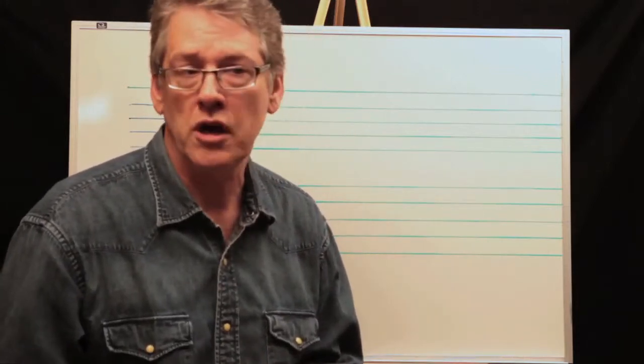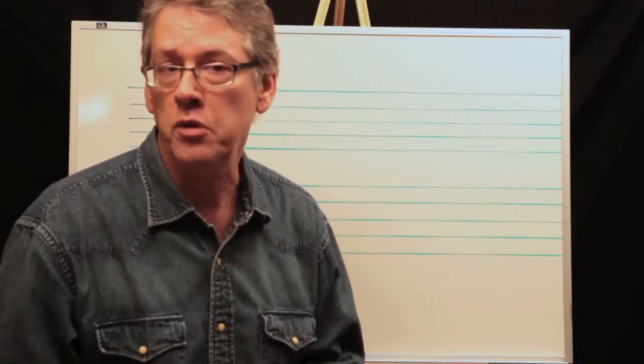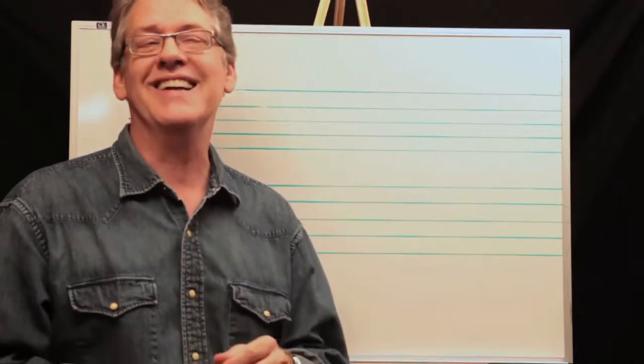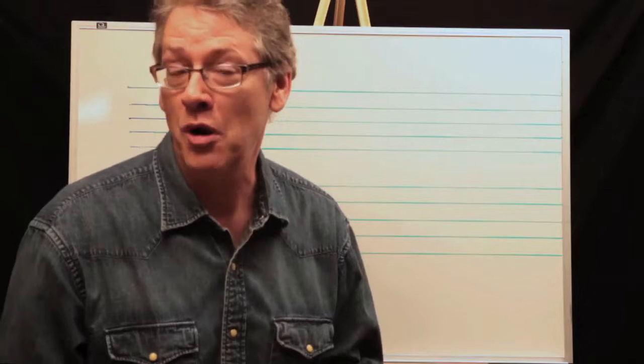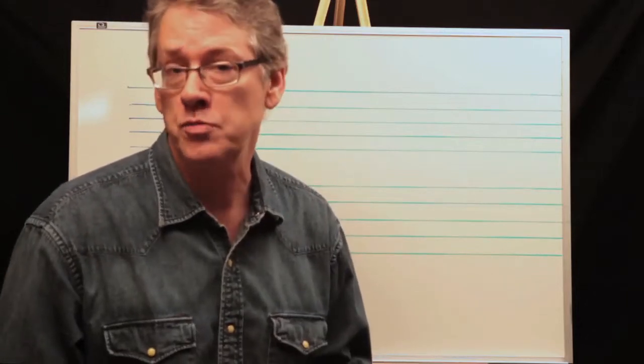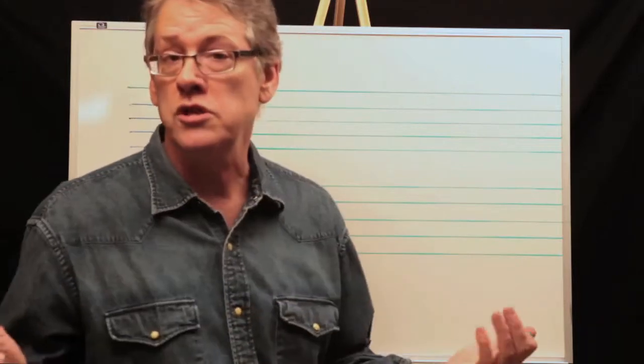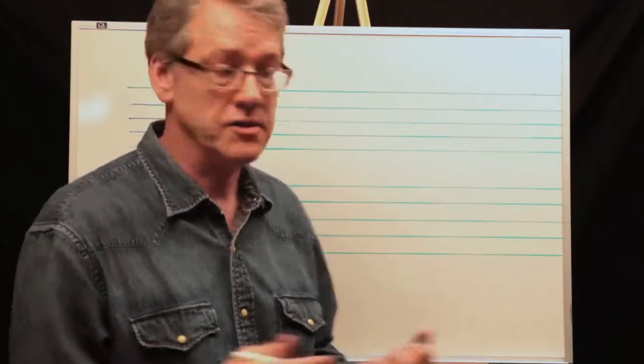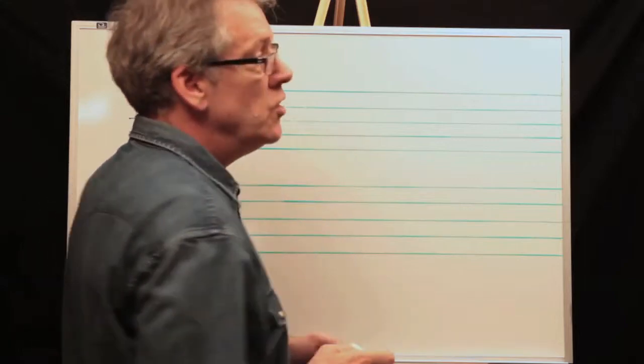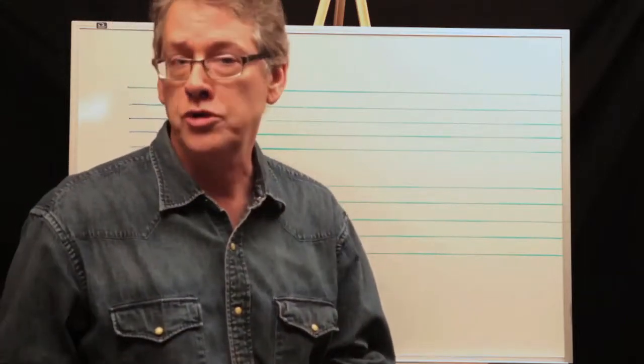The first thing I want to talk about is you need to transpose your parts depending on the instrument that they are. So let's start with trumpet. Let's start with two horns. Let's say we have a trumpet and tenor sax.